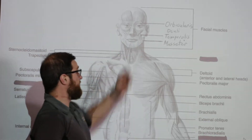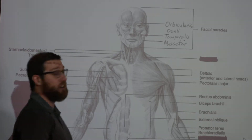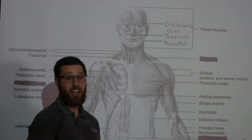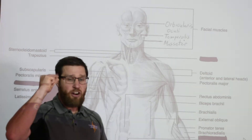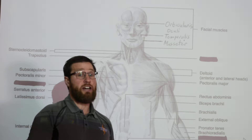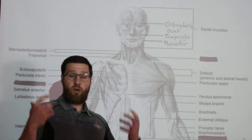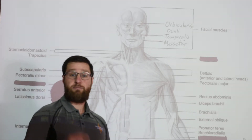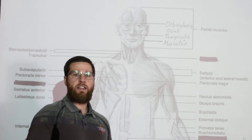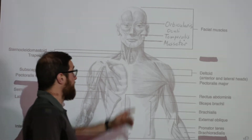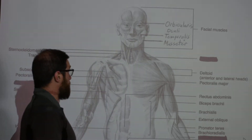The first muscle at the top is a facial muscle — your orbicularis oculi. The orbicularis oculi is the muscle that squeezes your eyes closed. Blinking is an automatic reflex, but when you physically try to close your eye, that's your orbicularis oculi, which goes around your eye socket.